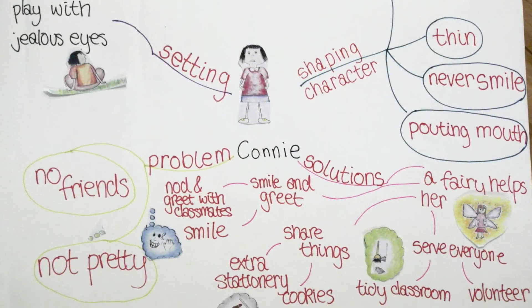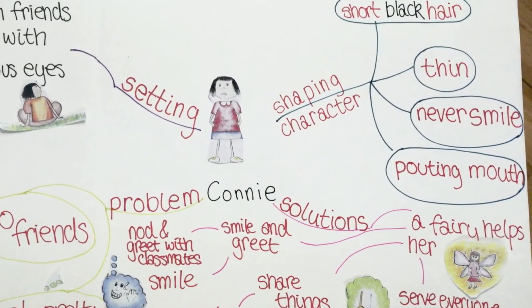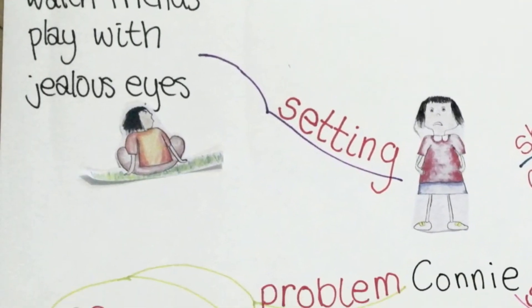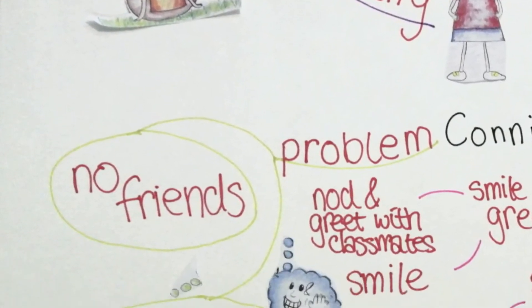Let's sum up the story plot so far from the mind map. Connie was a girl with short black hair who often watched her friends play with jealous eyes. She never smiled as she didn't believe that she was pretty.